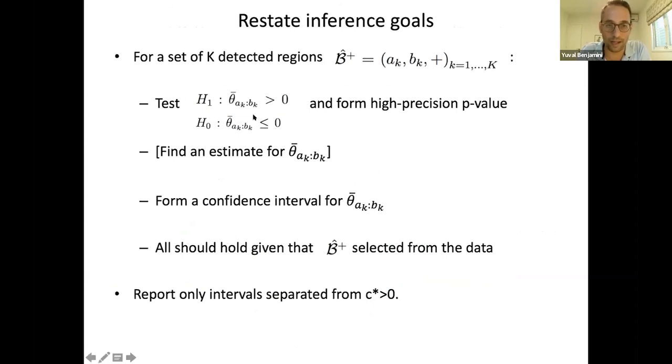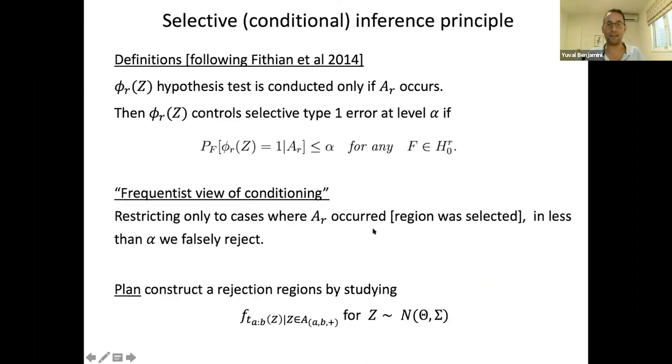Restating our goals, we want to make a test. We want to form a confidence interval. All of these should hold only given the fact that I selected A and B and maybe the sign based on the data. I will give you a few principles. What we want our method to hold is that if we only conduct the test whenever the event occurs, whenever we have a selection, we want to control selective type one error. If we drop all the other cases and only look whenever I selected, like I did with the blue stuff, only whenever my process passed the threshold, I look there. I still want my test to hold well.